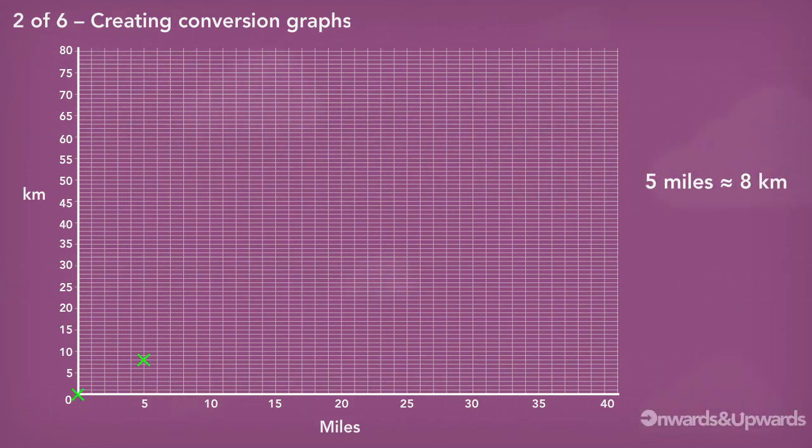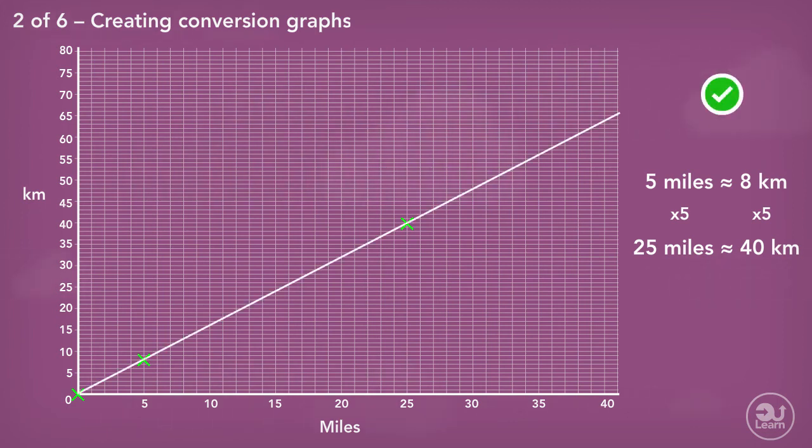Using the relationship between miles and kilometers, we can find other points. Let's multiply both values by five. 25 miles is approximately equal to 40 kilometers. Now that we have three points, we can join them together to create our conversion graph.